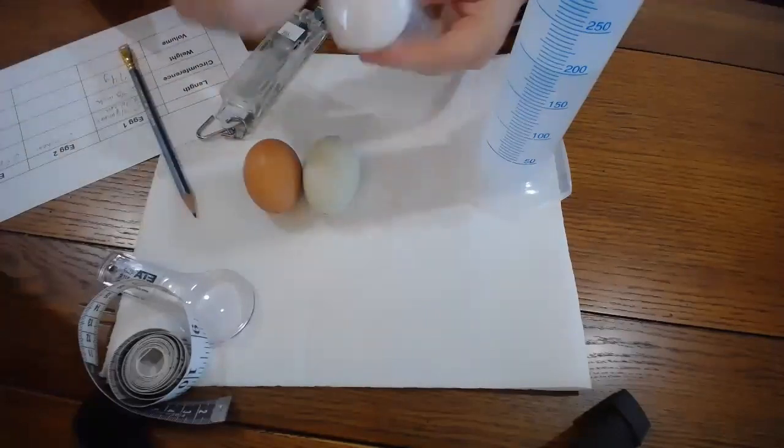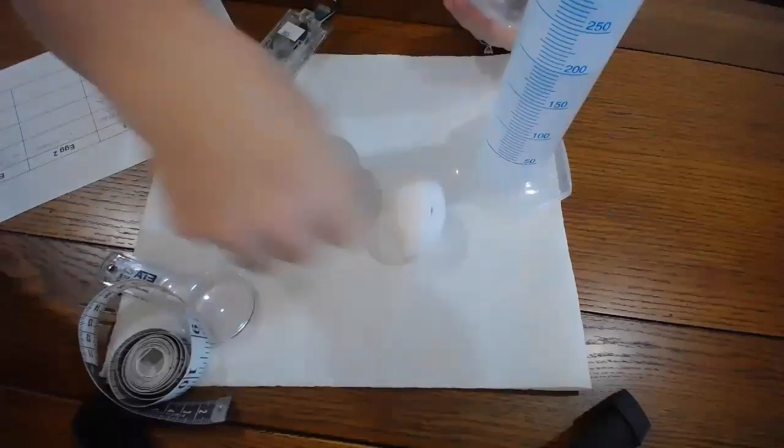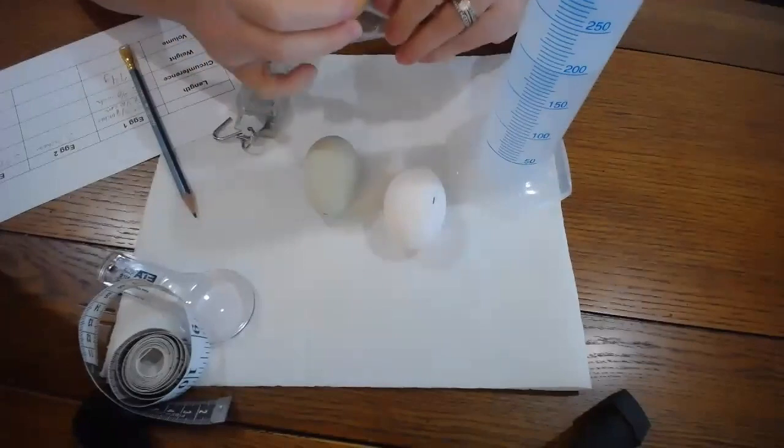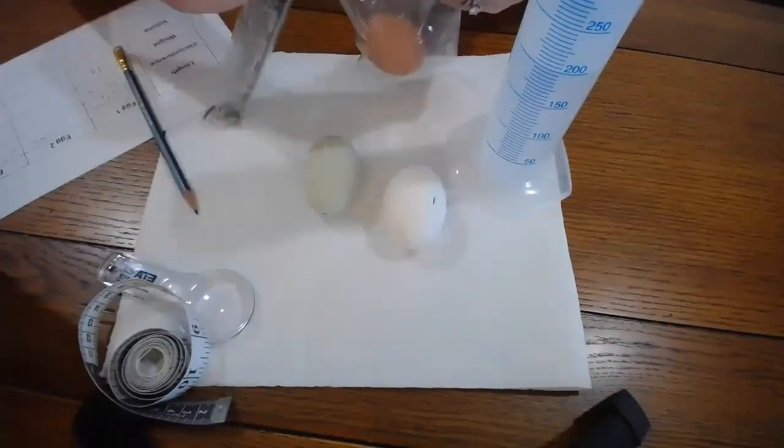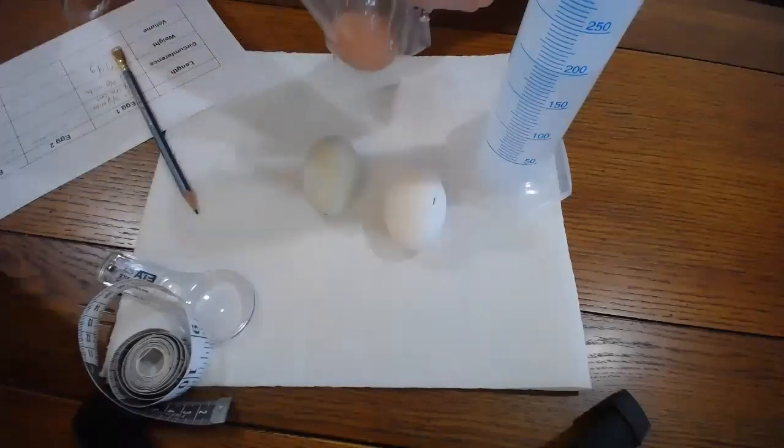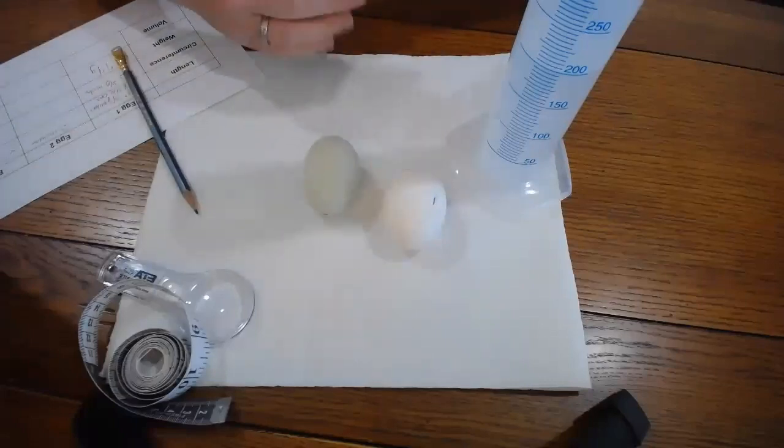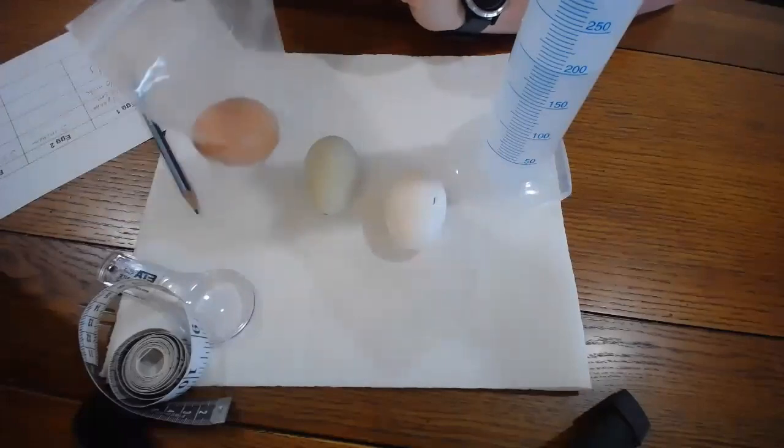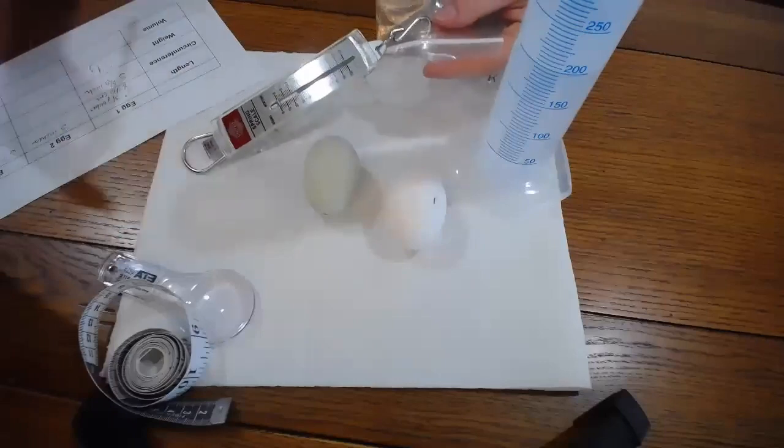And I am quickly going to weigh the brown egg. Remember, it was the smallest in length. Let's make a prediction together about the weight of this egg. If the white egg was 74 grams, how much of a difference do you think this brown egg will be? Here we go. This brown egg is 62 grams. So that's quite a difference.